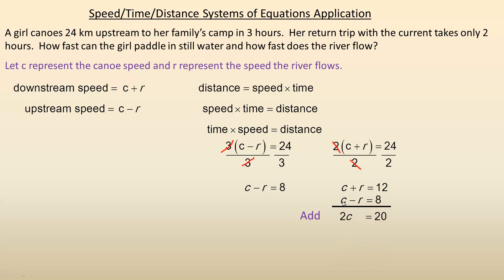So 1C and 1C adds to 2C, the opposite R's add to zero, that is why there is no R here, and 12 and 8 works out to 20. Now I'm trying to solve for C, so I'll divide out the 2, and C works out to be 10.